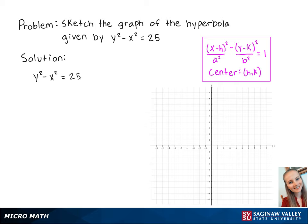First, we need to get our equation into standard form. To do this, we need to get the right-hand side equal to 1. So we're going to divide both sides by 25. Next, we need to rewrite both of the denominators so that we have y squared over 5 squared minus x squared over 5 squared equals 1.